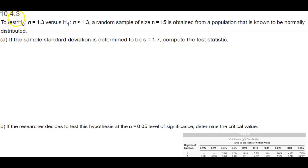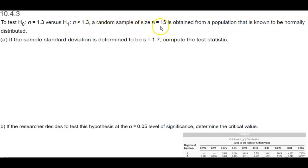Section 10.4.3. To test the null hypothesis where the population standard deviation is equal to 1.3 versus the alternative hypothesis where the population standard deviation is less than 1.3, a random sample of size n equal to 15 is obtained from a population that is known to be normally distributed. In part a, if the sample standard deviation is determined to be s equal to 1.7, compute the test statistic.